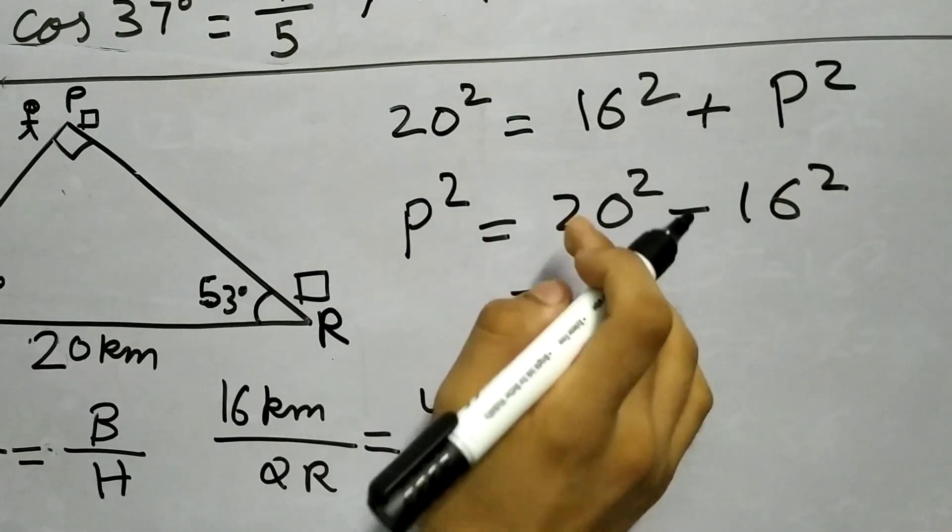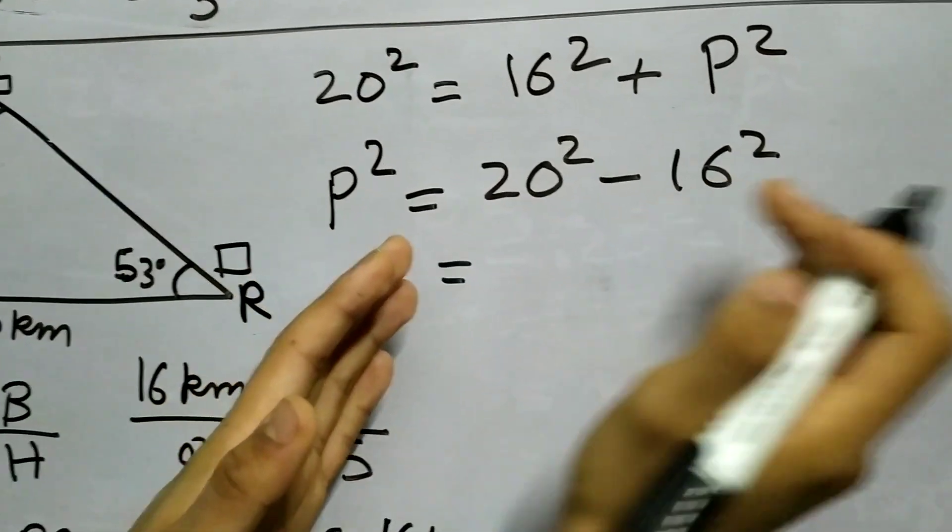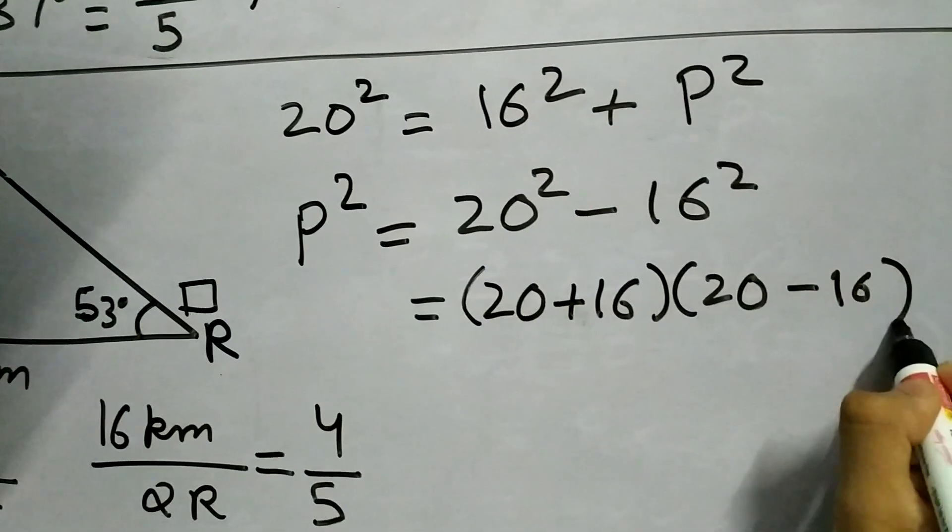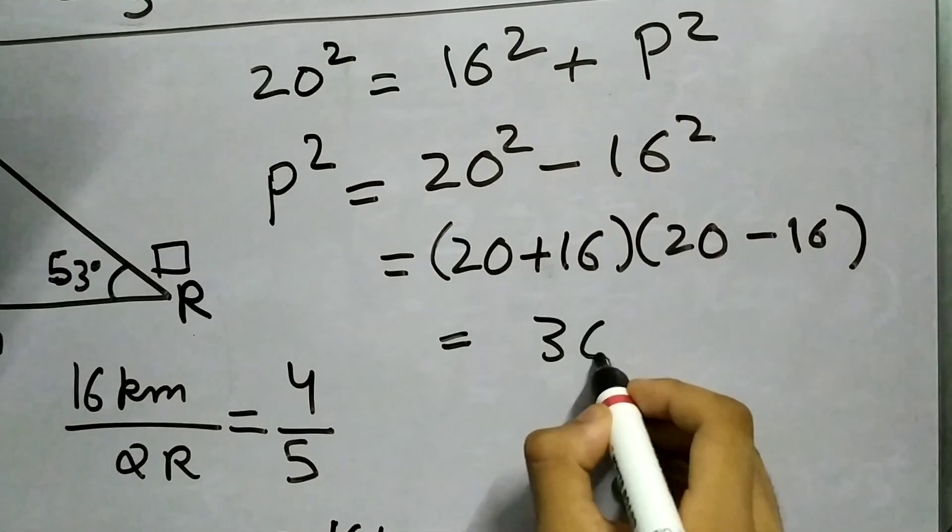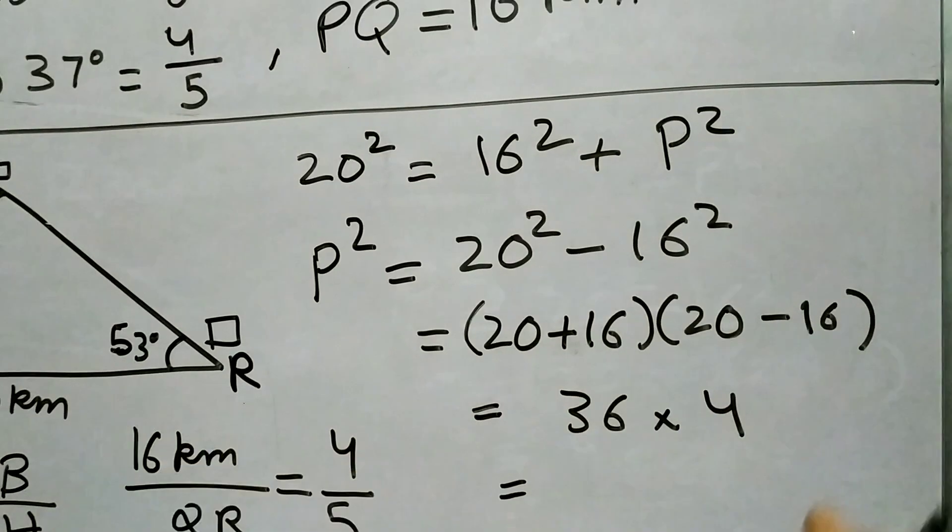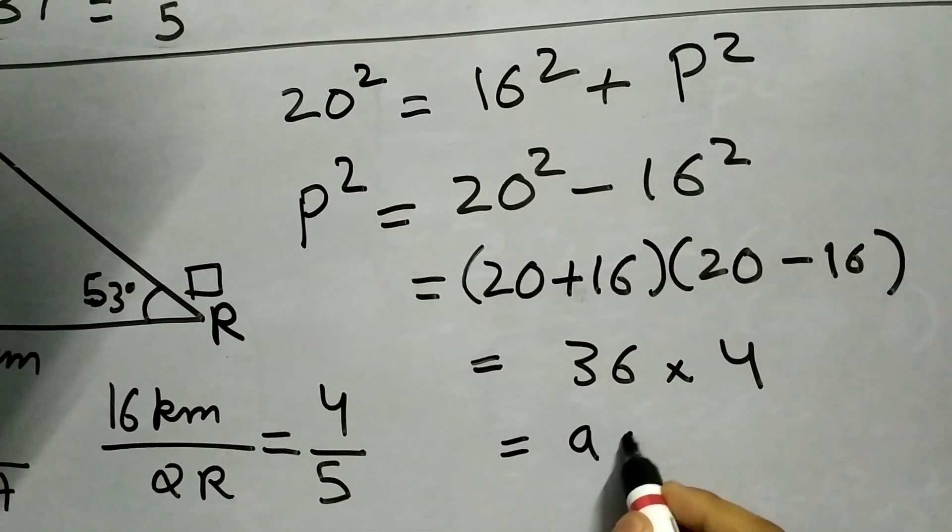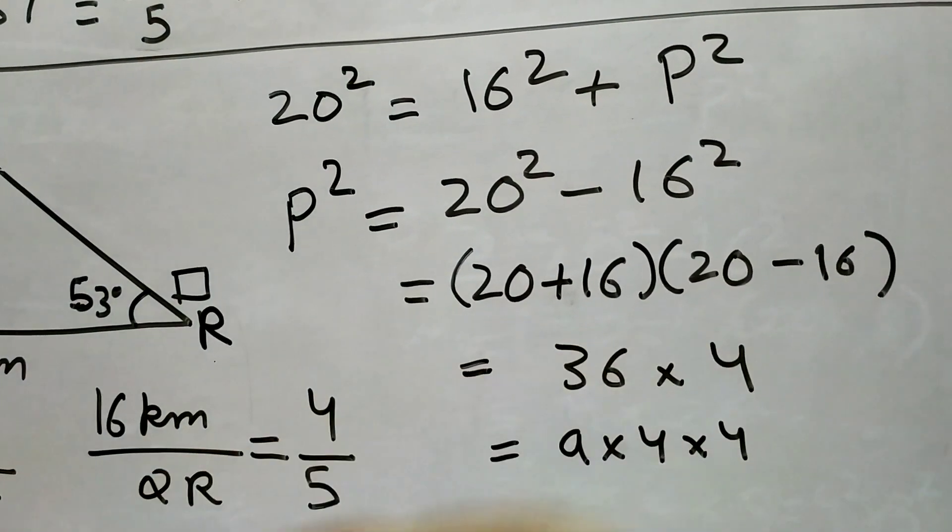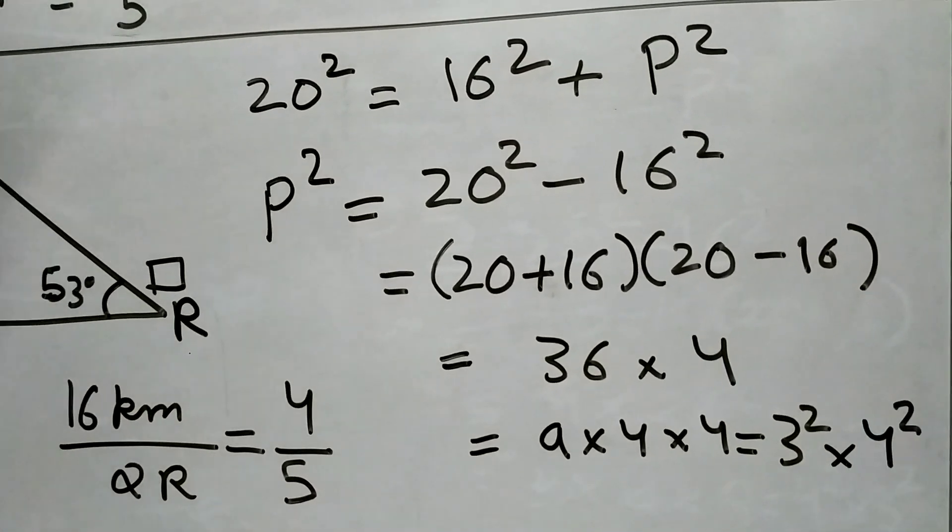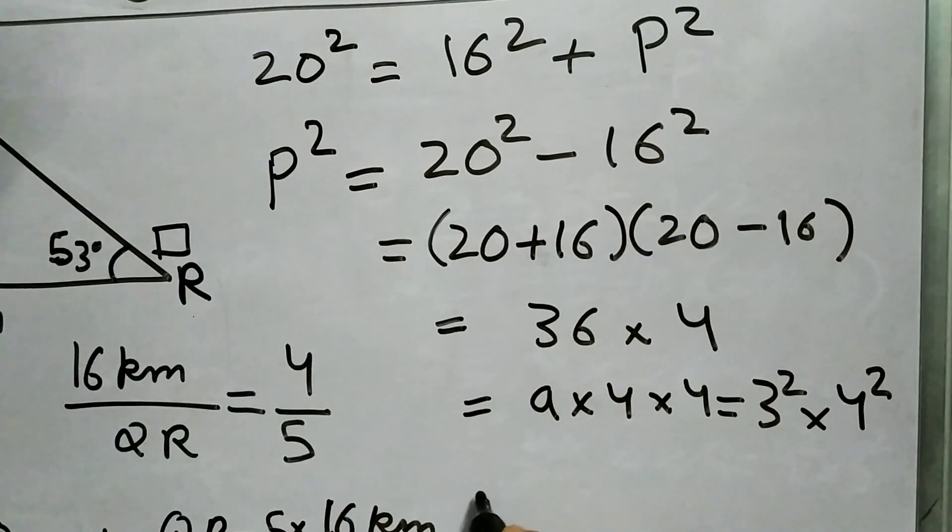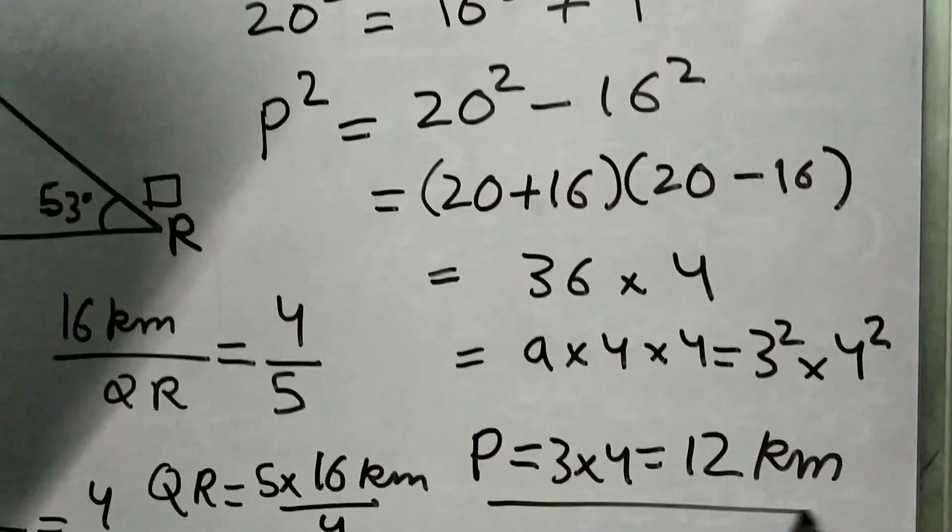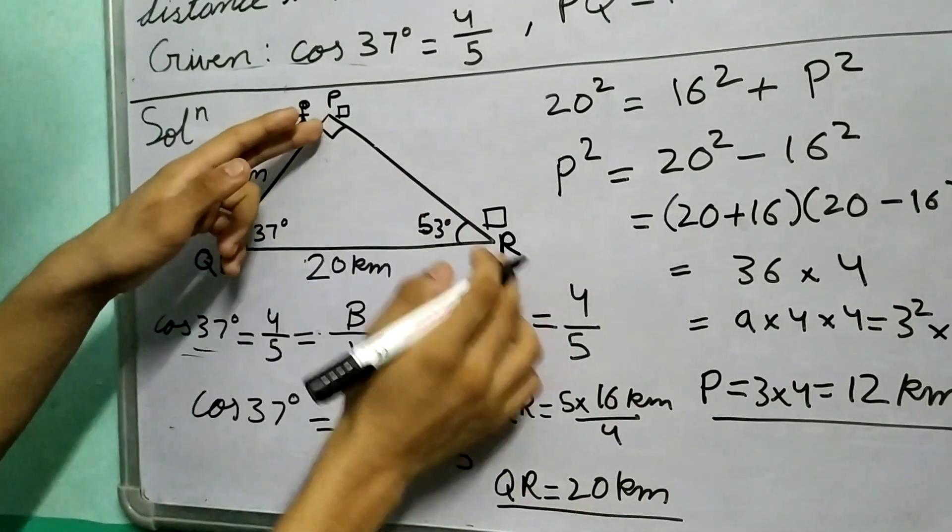P² will be 20² minus 16². I prefer using the identity a² - b² = (a+b)(a-b), so this is (20+16)(20-16) = 36 × 4. I don't prefer to solve 36 × 4 directly, so 36 is 9 × 4, giving us 3² × 4². This gives P as 3 × 4 = 12 km, so PR is 12 km.